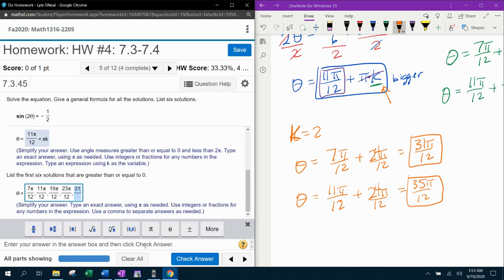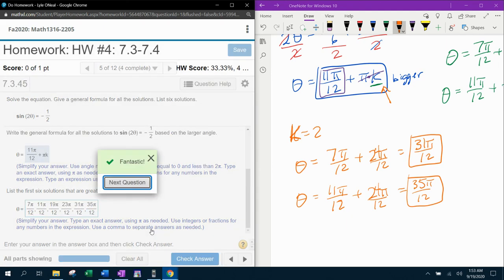31 pi over 12. Don't forget your comma. If you miss a comma, instant death. 35 pi over 12. And then we're going to hit enter. And we're verified.